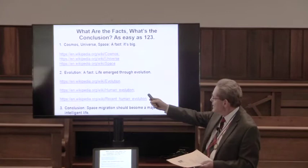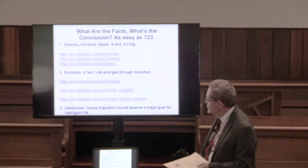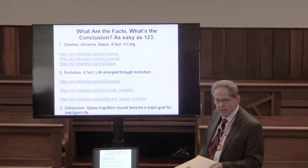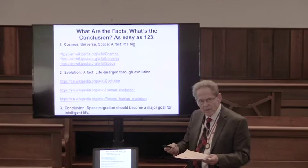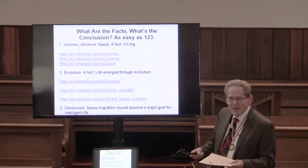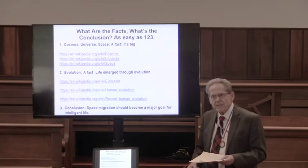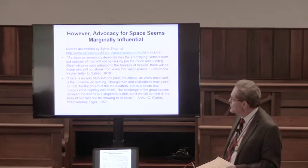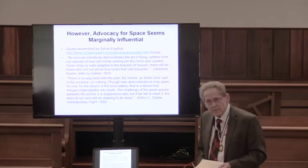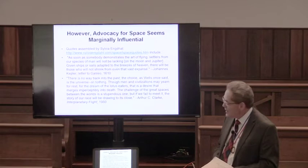Life emerged through evolution. We found around 4 billion years ago some sort of soupy something. And then human evolution — we've traced those by assorted DNA analyses. Even recent human evolution: we find remarkable modifications like adapting to tolerate milk or alcohol, parts of being civilized in different cultures. My conclusion: space migration should become a major goal for intelligent life. We are such an incredible accident at 4 billion years, and we've got a small window of chance to do something about it. However, advocacy is marginally influential — maybe a top 0.0001% will occasionally listen each generation to that theme.